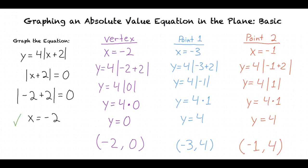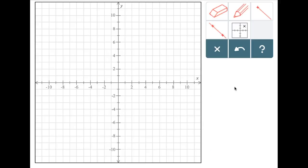Now that we have all three of our points, we can graph our absolute value equation. First, we will need to mark our three points on the graph. We will make marks at the points negative 2 comma 0, negative 1 comma 4, and negative 3 comma 4.